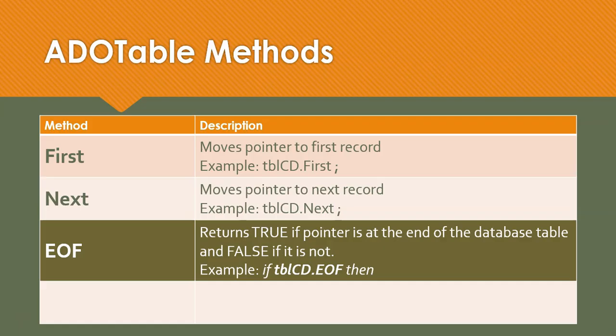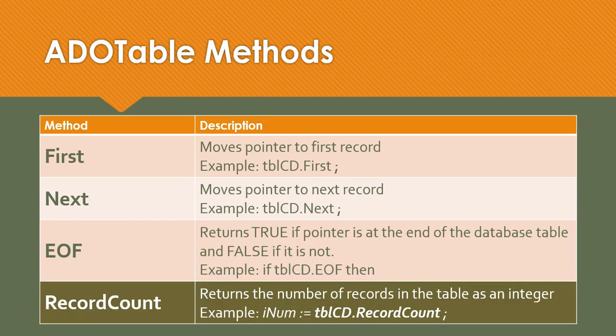Maybe you want to keep going Next until we get to the end of the file. How do we know when that is? There is EOF, which stands for end of file — it's a boolean function that returns true if the pointer is at the end of the database table, and false if it's not. You can use that in an if statement or a while loop to find out if you're at the end of the table when you don't know how many records there are. There is also a way to find out how many records exist using RecordCount — so tblcd.recordcount — which returns an integer telling you how many records are in that table.